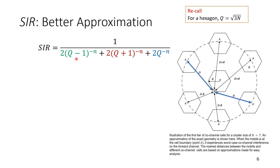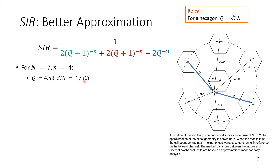For capital N = 7 and small n = 4, substituting into this more accurate expression gives Q = 4.58 and the SIR = 17 dB. This is not 18 dB or 18.66 dB as before — using the more accurate expression we find we are actually below the 18 dB threshold. So we must go to a higher N.